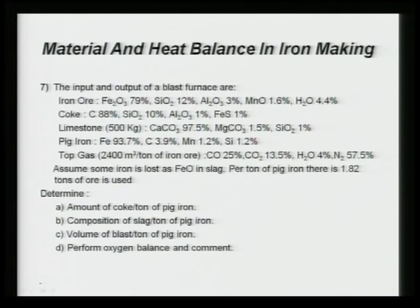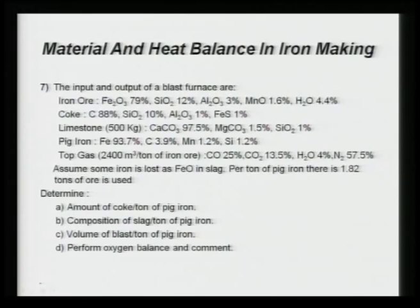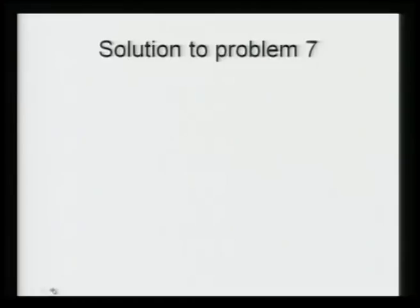Per ton of pig iron, 1.82 tons of ore is used. You have to determine the amount of coke, the composition of slag, the volume of blast, and perform an oxygen balance. We will take the basis as 1 ton of pig iron, i.e., 1000 kg of pig iron, and make the balance on that basis.